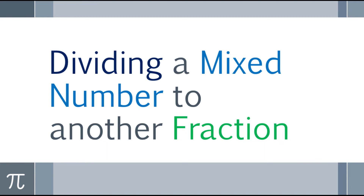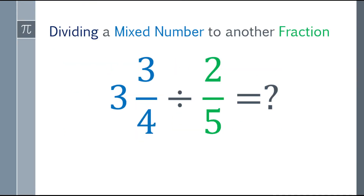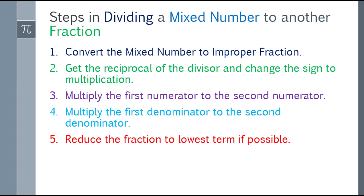So third topic: how about dividing a mixed number by a fraction? We also have five steps. The first one is: convert the mixed number to an improper fraction. Second, get the reciprocal of the divisor and change the sign to multiplication. Third, multiply the first numerator by the second numerator. Fourth, multiply the first denominator by the second denominator. And lastly, reduce the fraction to lowest term if possible. The difference here is that you have to convert the mixed number to an improper fraction first.